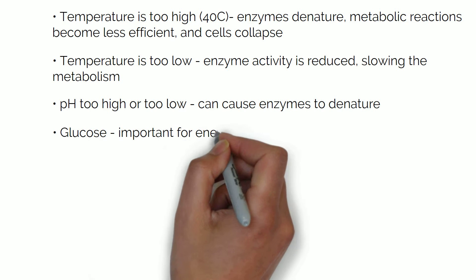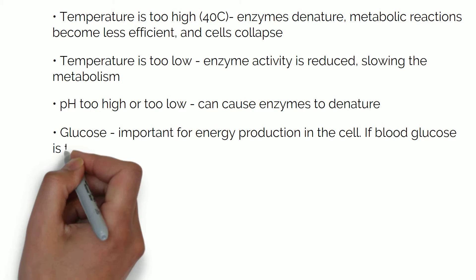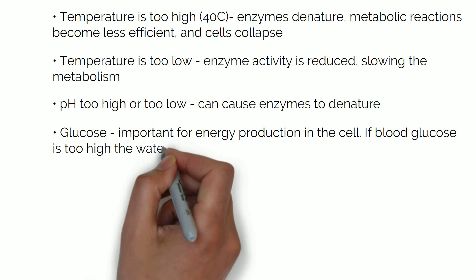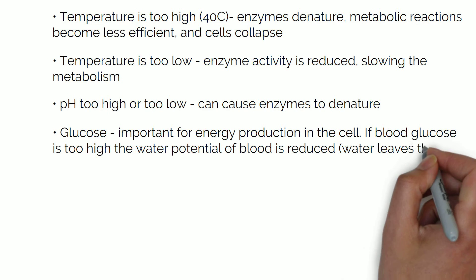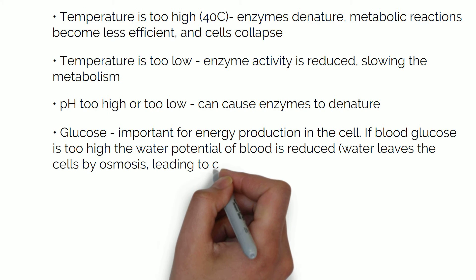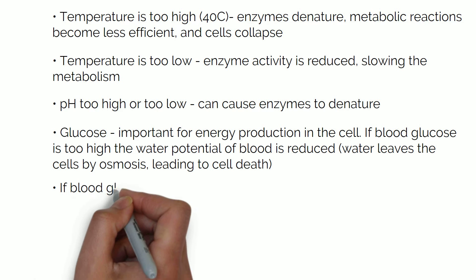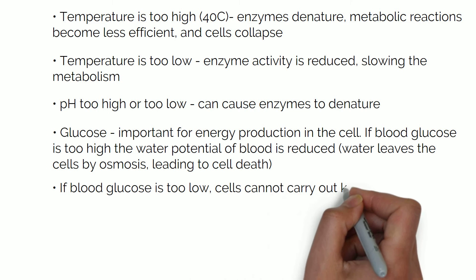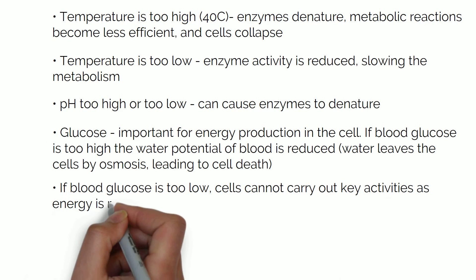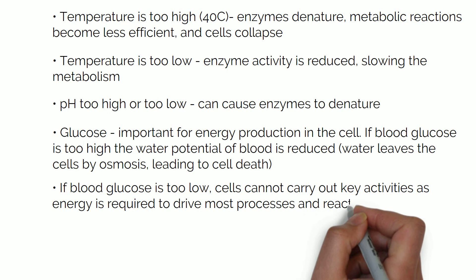Glucose is important for energy production in the cell. If blood glucose is too high, the water potential of blood is reduced, leading water to leave the cells by osmosis, leading to cell death. If blood glucose is too low, cells cannot carry out key activities as energy is required to drive most processes and reactions in the cell.